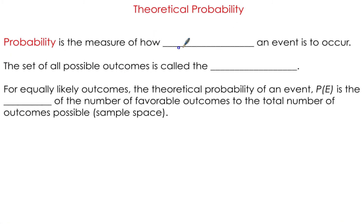So what is probability? Probability is the measure of how likely an event is going to occur. The set of all possible outcomes is called the sample space.